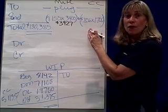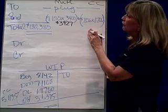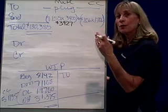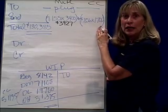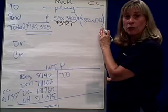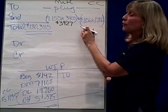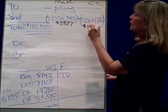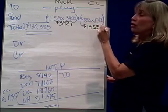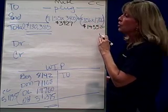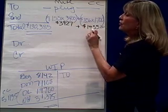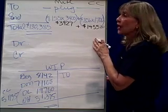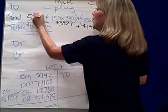Likewise, in step 4 we found that our cost per equivalent unit for conversion was $0.856. Going back to step 2, the equivalent units for ending inventory were 1,700 equivalent units. So 1,700 times $0.856, we're going to assign $1,455.20 of cost to ending inventory. Adding these two together — $3,927 plus $1,455 — ending inventory is going to be assigned a total of $5,382.